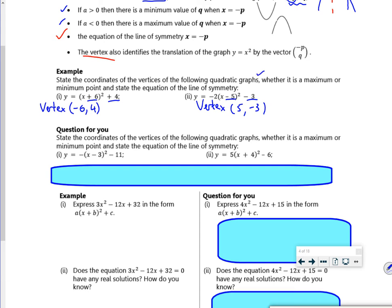So state whether it's max or min. This, because it's positive, is a U shape, so this is a min point. This one, because it's negative at the start, is an n shape, so that's a max point.